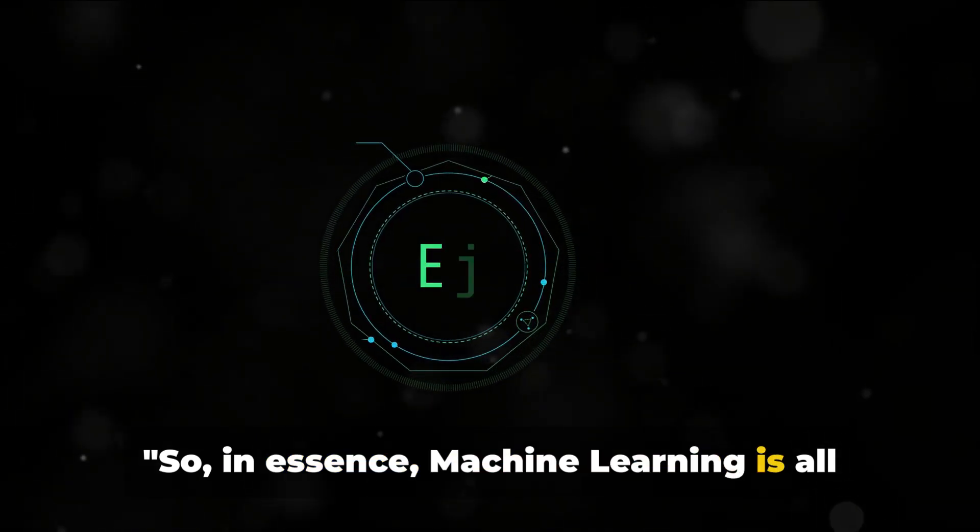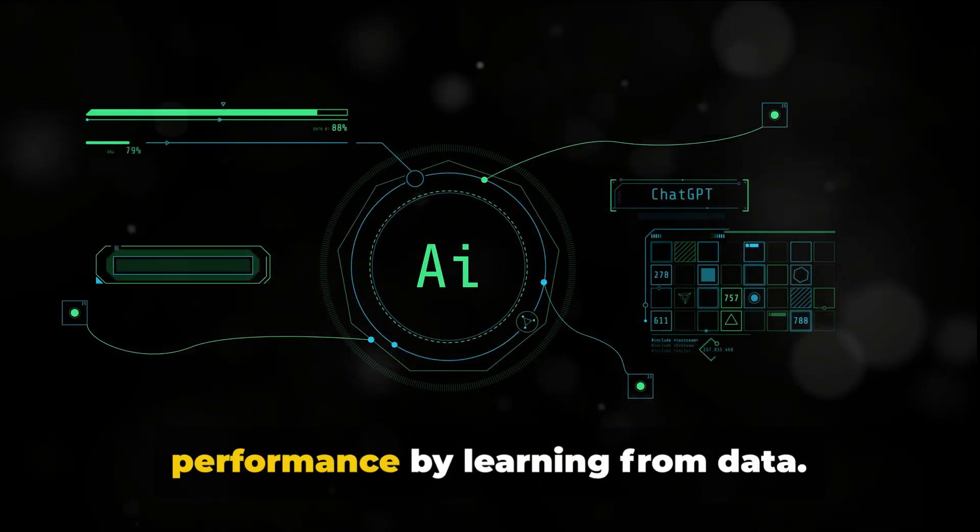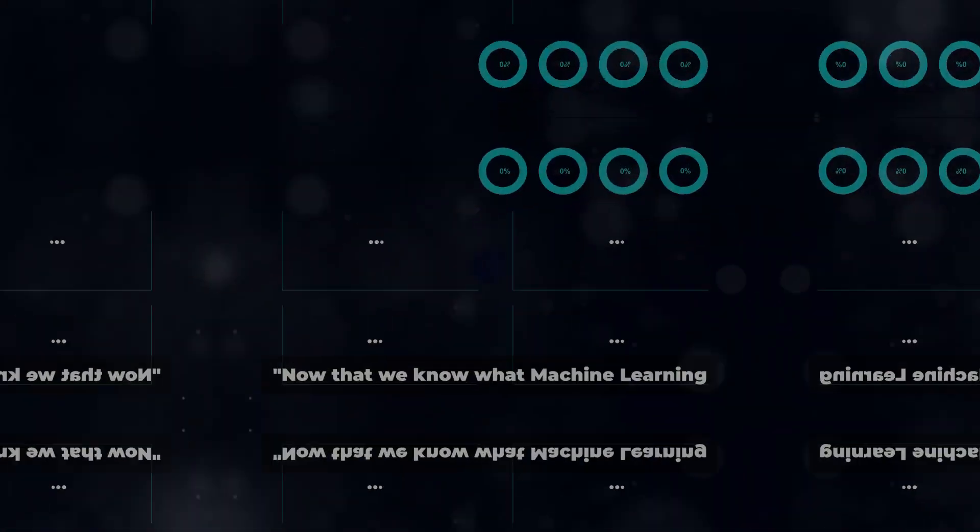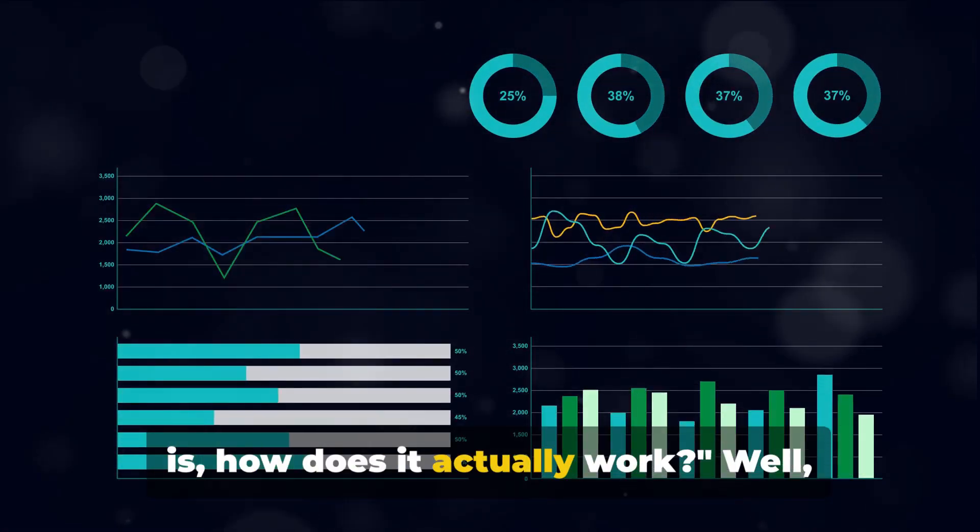So in essence, machine learning is all about computers improving their performance by learning from data. Intrigued? Stick around for more. Now that we know what machine learning is, how does it actually work?